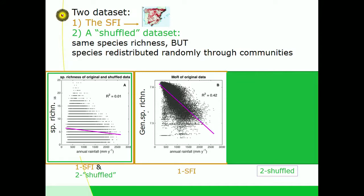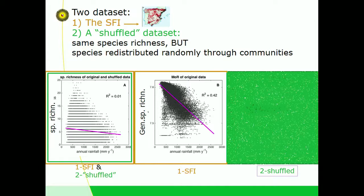The two datasets have exactly the same species richness. But when community composition is destroyed — the species pool becomes one throughout the country — there is no pattern in the generalized species richness.